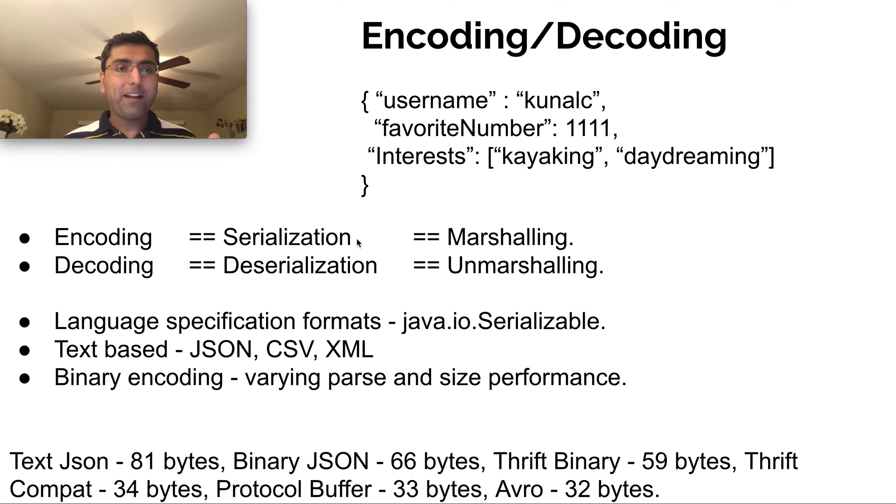So encoding and decoding is very important because there are various ways of encoding and decoding. There could be language-specific formats that you can use in Java. You have Java IO serializable, but a lot of downsides of doing that. But there are various text-based encoding as well, like CSV, JSON, XML, and others, which are verbose but human readable. But they take a lot of space in storage.